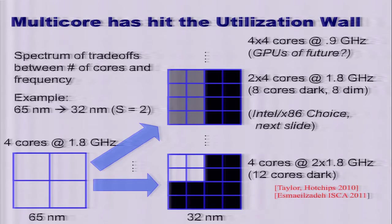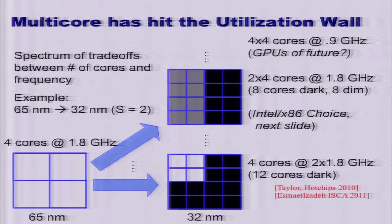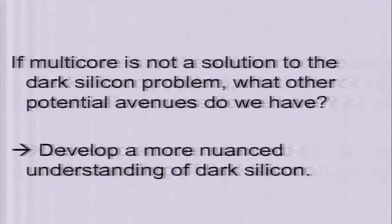As a result of the utilization wall we have dark silicon, and from the architect's perspective there's a spectrum of trade-offs when scaling a design to a new process generation. We can either increase frequency and drop the utilization of the rest of the silicon area — the maximally dark version — or have intermediate points where we lower the frequency and keep more of the silicon lit up. We could even drop the overall frequency to chase parallelism, which is in fact what some designs like GPUs are doing.